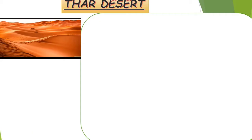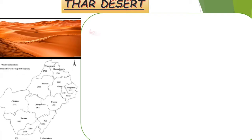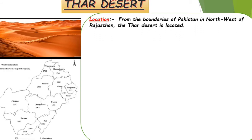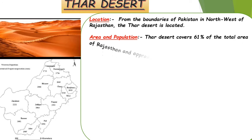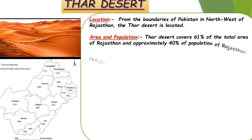Let's start with the Thar Desert. We will study the physical regions point by point. Point one: Location — the Thar Desert is located in the northwest part of Rajasthan, bordering Pakistan. Point two: Area and Population — the Thar Desert covers 61% of the total area of Rajasthan, and approximately 40% of the population of Rajasthan resides here.